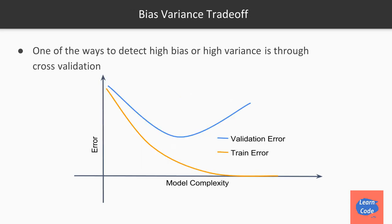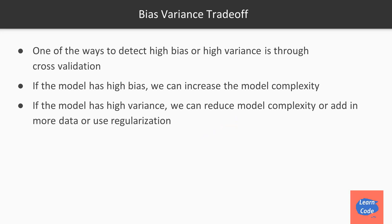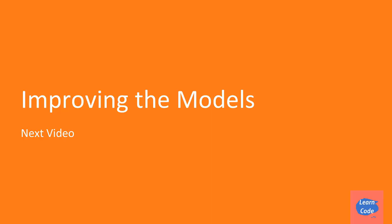One way to detect high bias or high variance is through cross validation. As you increase model complexity, training error keeps going down, but at some point validation error starts to increase — this is the optimal point with both low variance and low bias. As a rule of thumb, if a model has high bias, increase model complexity; if it has high variance, reduce model complexity, add more data, or use regularization, which we'll see in the next video.